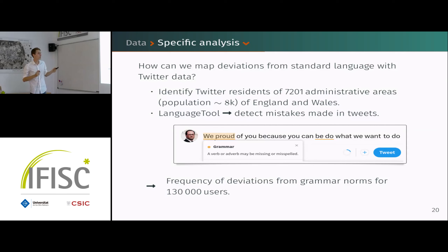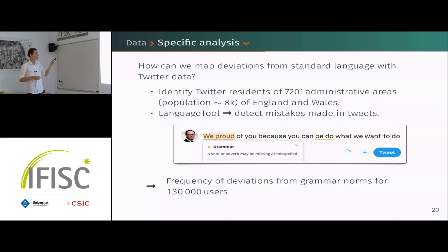To get deviation from standard language, we use a grammar and spell checker called LanguageTool. For example, applied to a sentence by former French president François Hollande, the tool would give two matches — two mistakes. The tool not only identifies a mistake but also categorizes it — for instance, a grammar mistake because a verb is missing.